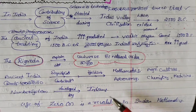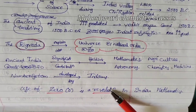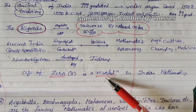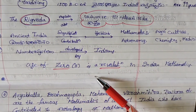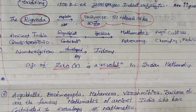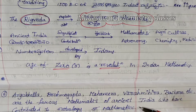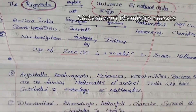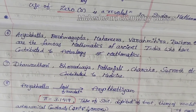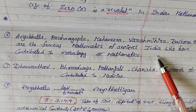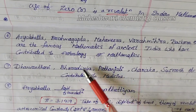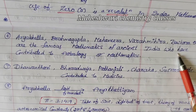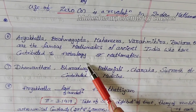The number system was developed by Indians. Sankhya Shastra, made by Bharati, was a revolution in Indian mathematics. The concept of zero was also a revolution in Indian mathematics. Famous mathematicians of ancient India — Aryabhatta, Brahmagupta, Mahavira, Varahamihira, Bhaskara — contributed to astrology and mathematics.